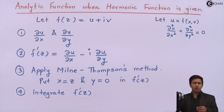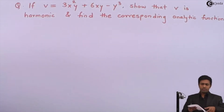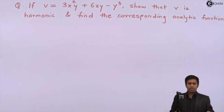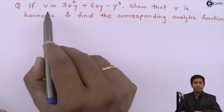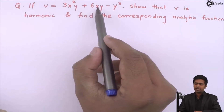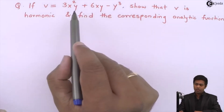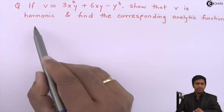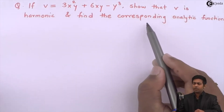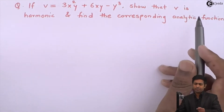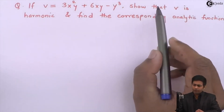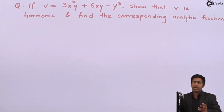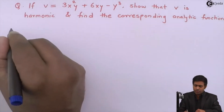To understand this concept, let us take a small example. We have a function v = 3x²y + 6xy − y³, which is a function of x and y. We have to first show that v is harmonic, and then find the corresponding analytic function. Let us start with part one: showing that v is harmonic by proving the Laplace equation for v.